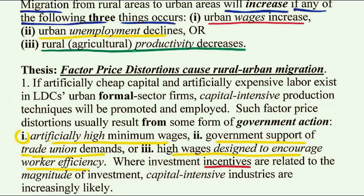If we have two factors of production — labor and capital — in the urban sector, and capital is artificially cheap, priced below market clearing, while labor is made artificially expensive, capital-intensive techniques will be promoted and employed. If you can get cheaper capital and workers are expensive, why would you hire the expensive worker rather than use cheaper capital? Harris and Todaro are saying that because the urban sector has this distortion — paying too high a wage for workers — which causes the migration, and capital is held cheap through low interest rates or government subsidies on capital importation, workers would find themselves unemployed. This could be part of the explanation for why we have urban unemployment.